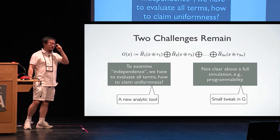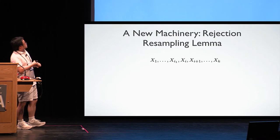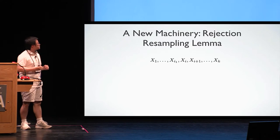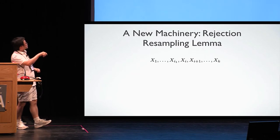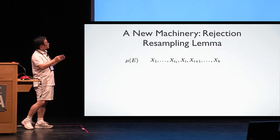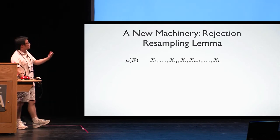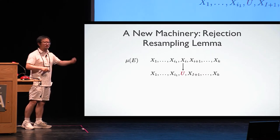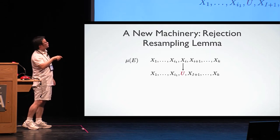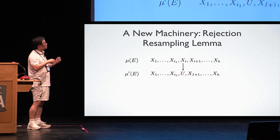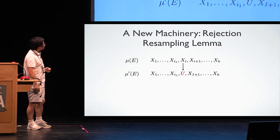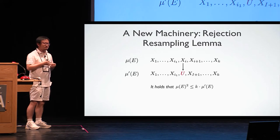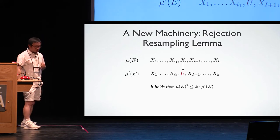So we handle the first challenge by developing a new analytic tool. And for the second challenge, we actually need to tweak the construction a little bit more. So in order to tackle the first challenge, we develop a new analytic machinery we call rejection resampling lemma. So consider a vector of random variables and the adversary defines his favorite event e, and mu means the probability of this event. Then the adversary can choose arbitrarily one of the random variables and resample it according to the uniform distribution. Then this defines, again, another probability of the same event that adversary likes.